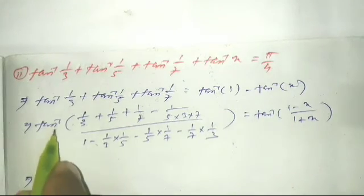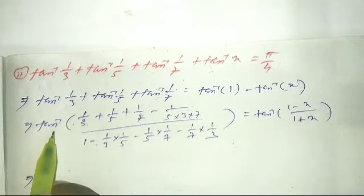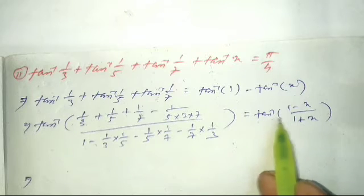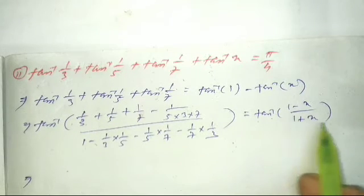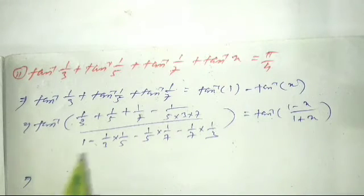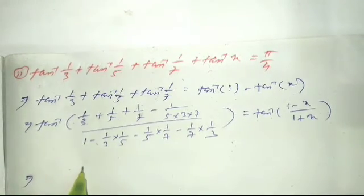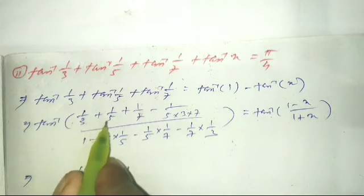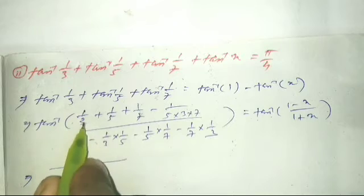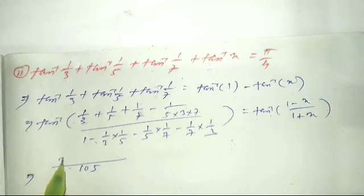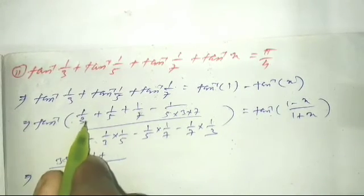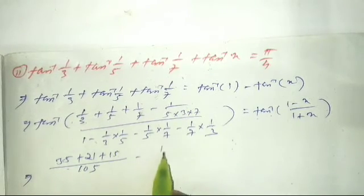The tan inverse and inverse cancel. Now computing the numerator with LCM of 3, 5, and 7: LCM is 105. So 1/3 plus 1/5 plus 1/7 equals 35 plus 21 plus 15 all over 105, and minus 1/(3·5·7) equals minus 1/105.